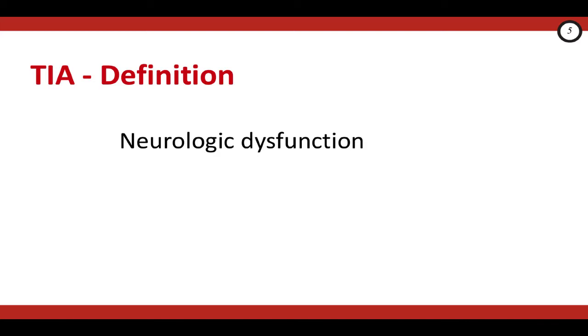How transient are we talking about? The updated definition is that the neurologic dysfunction lasts less than an hour, and it's an ischemic or vaso-occlusive event, so the neurologic dysfunction should be focal, either to the brain or to the retina.